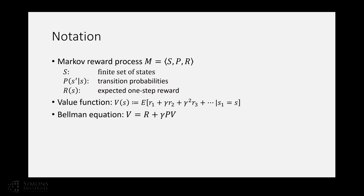A fundamental result in reinforcement learning is the Bellman equation, which gives a recursive relation of state values. It says that the long-term reward of a certain state equals the one-step reward plus the discounted long-term reward of the next state. In matrix form: V is a vector where each dimension corresponds to one state, R is the reward vector, and P is the transition matrix — a succinct way to write the Bellman equation.